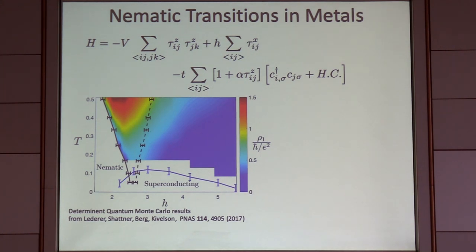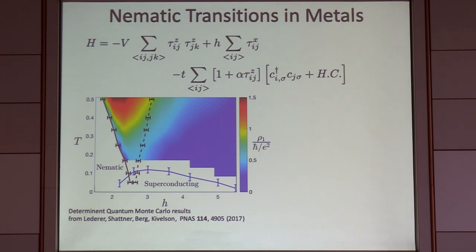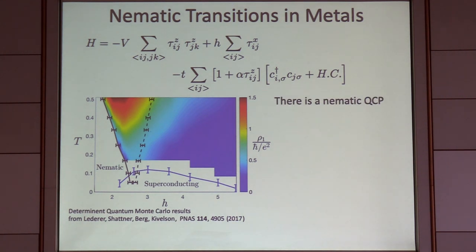Q: If I were to switch off H, the system still has quantum dynamics from the electrons? A: No — tau-z is conserved. So the taus have no quantum dynamics without H, you must have it.